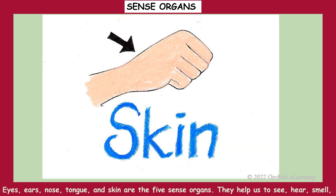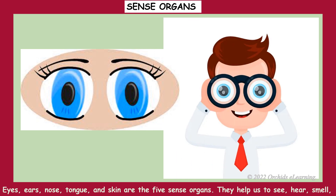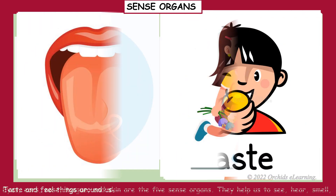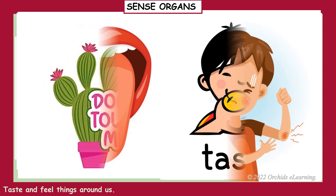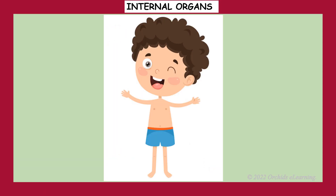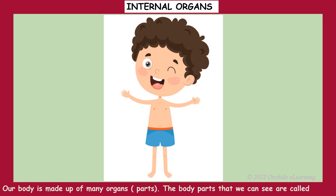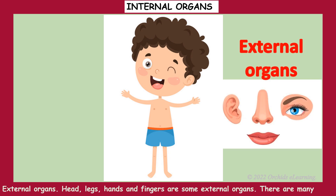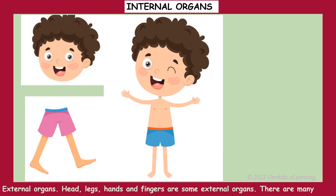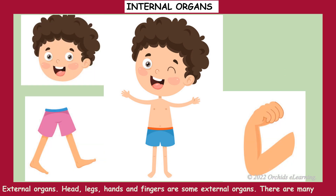Eyes, ears, nose, tongue, and skin are the five sense organs. They help us to see, hear, smell, taste, and feel things around us. Our body is made up of many organs. The body parts that we can see are called external organs.